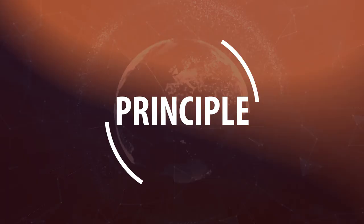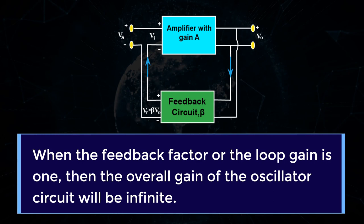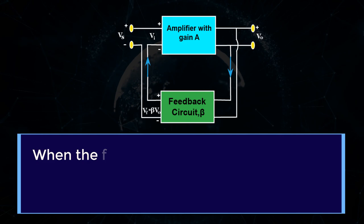What is the principle of oscillator and Barkhausen Criterion? The principle of the oscillator is that when the feedback factor or the loop gain is 1, then the overall gain of the oscillator circuit will be infinite.